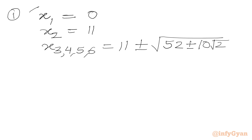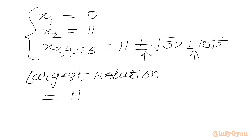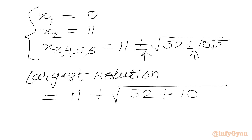Out of these six solutions, we are having the largest solution. If we consider both signs as positive, the largest solution would be 11 + √(52 + 10√2). And this is our answer. The largest solution would be 11 + √(52 + 10√2).